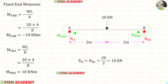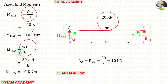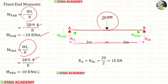Now let us find the fixed end moments and the reactions. First, let us find them in span AB. In span AB, we have a point load of 20 kilo Newton acting at the center. The formulas to find the fixed end moments are minus WL upon 8 and positive WL upon 8. Here W is 20 and L is 4. After the calculation, we get M of AB and M of BA.